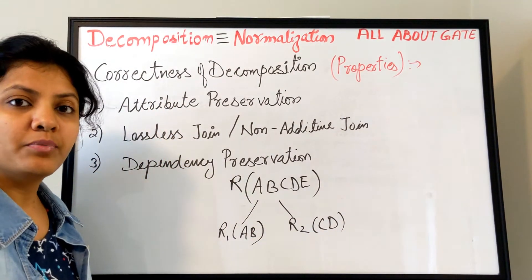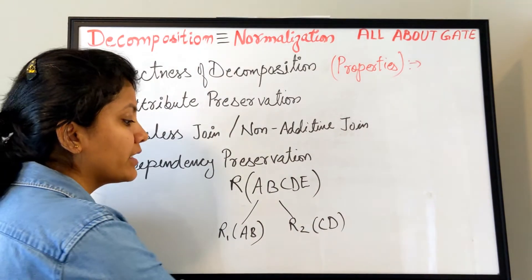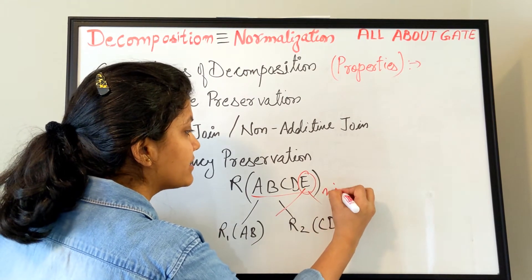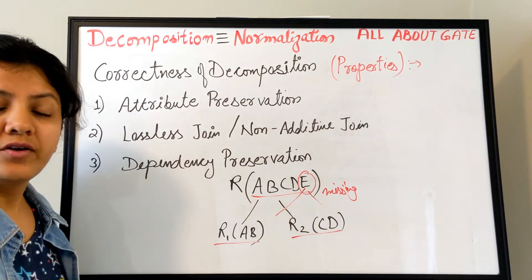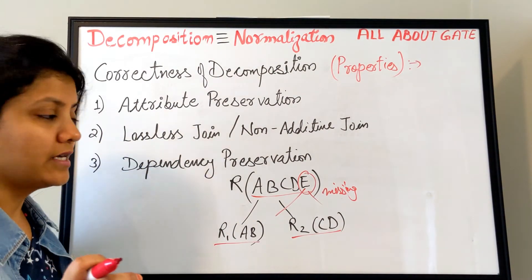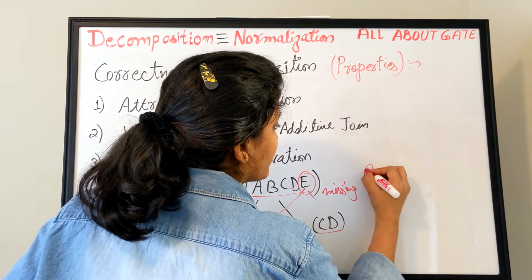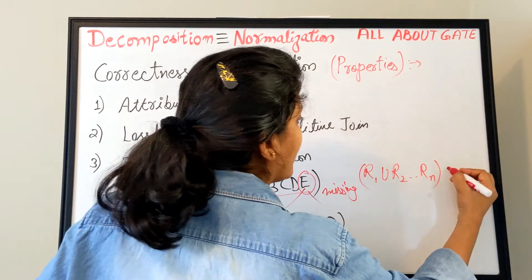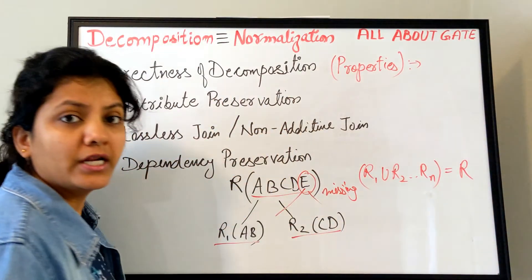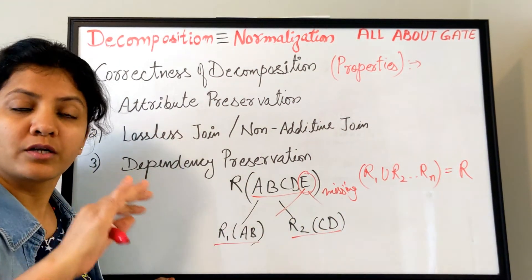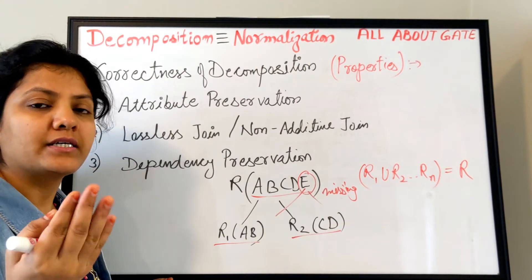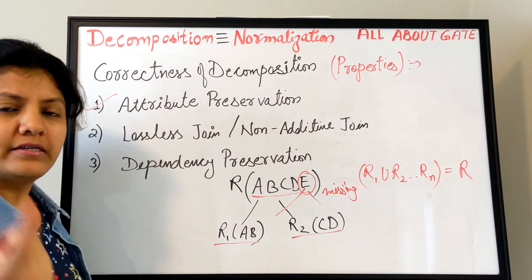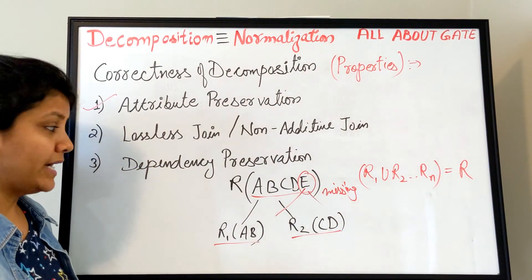Is this a correct decomposition? No — at the very first instance you can say it is not a correct decomposition, because it is not preserving all the attributes. Attribute E is missing. It is not taken care of when you are decomposing. The simple first check is that all the attributes — whatever R1, R2, or however many relations you decompose it into — once you take the union of all their attributes, it should be equal to the attributes of relation R. Each and every attribute should become part of it; none of the attributes should be missed or lost while decomposing. That is the first property: attribute preservation.